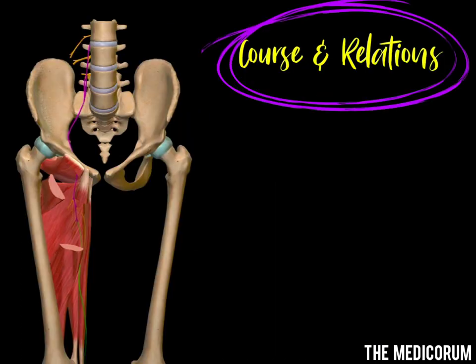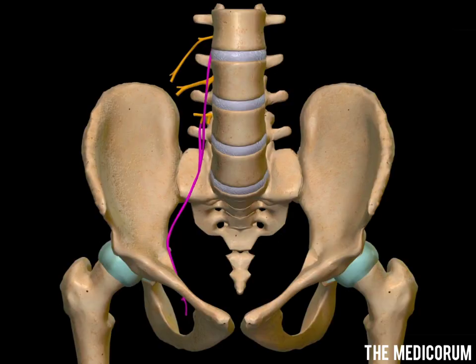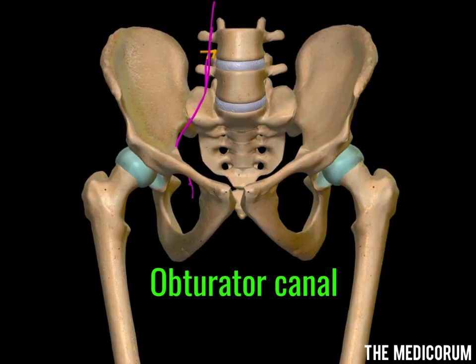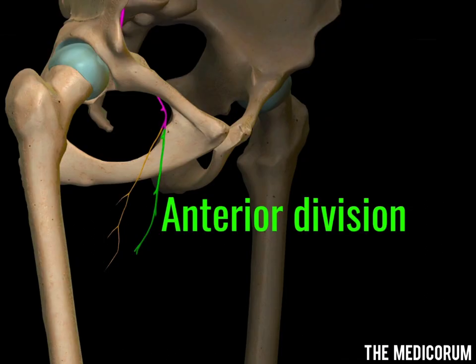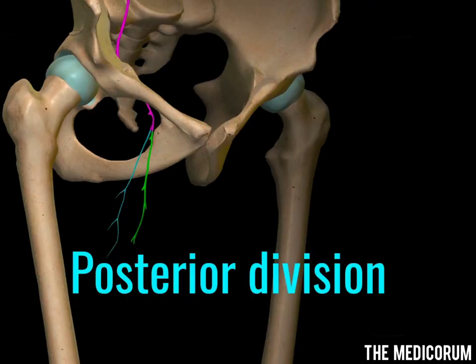Regarding the course and relations of the obturator nerve: as it is a branch of the lumbar plexus, its course begins from the pelvis. As soon as it enters the obturator canal, it divides into two divisions — the anterior division and the posterior division.